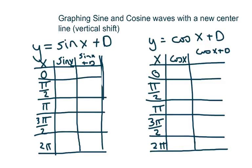We're going to be graphing sine and cosine waves with a new center line. It's like a vertical shift — you're just going to shift the whole graph up or down.